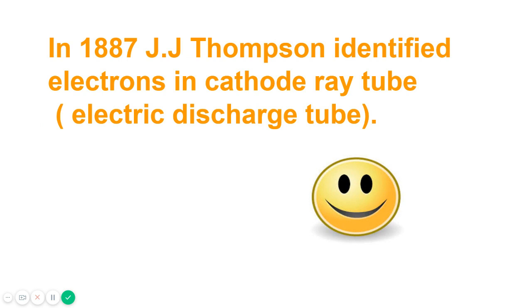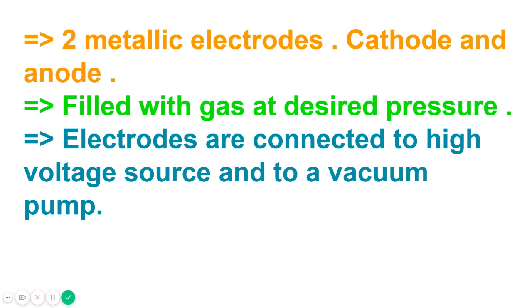Let's see what this is. In the electric discharge tube or gas discharge tube, two metallic electrodes—cathode and anode—are present. It is filled with gas at desired pressure. Electrodes are connected to high voltage source and to a vacuum pump.